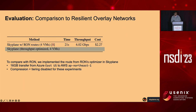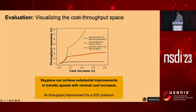Comparing against Resilient Overlay Networks as a baseline—implemented within Skyplane for a fair apples-to-apples comparison—we capture a 1.3x speedup at up to 30% lower egress cost. We can also visualize the cost and throughput trade-off space. Skyplane can achieve substantial improvements with minimal cost increases: for example, a 4x throughput improvement for just a 20% cost premium on the Azure-to-AWS transfer path.